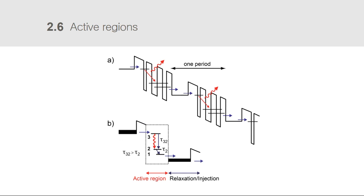One active region consists of three finite quantum wells, forming a standard 3-level system where each level is a confined state. Under the right applied bias, an electron is injected via resonant tunneling into the upper state of the active region and relaxes to the lower state, eventually emitting a photon — this is the transition from level 3 to level 2. Importantly, the lifetime of the transition from level 3 to 2 must be longer than the lifetime of electrons in level 2, because this causes population inversion between two subbands, which drives the relaxation process. The electron is then transported through the relaxation region and injected into the upper state of the following period, where it again emits a photon.